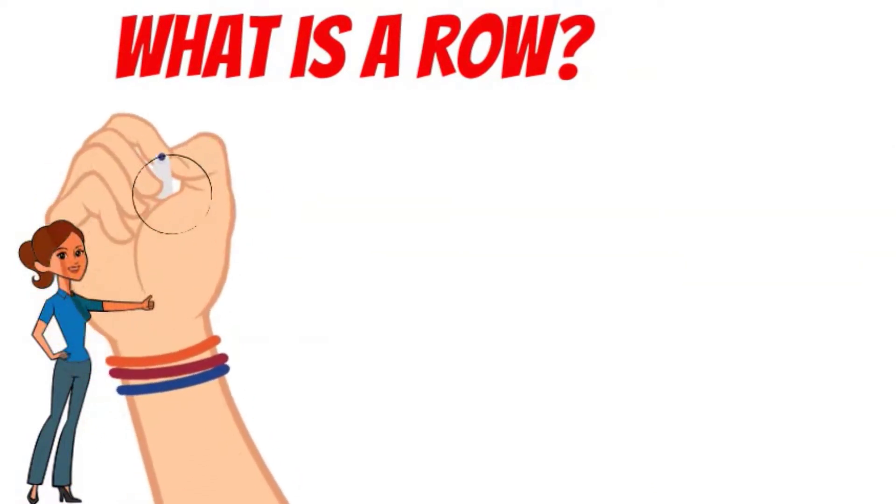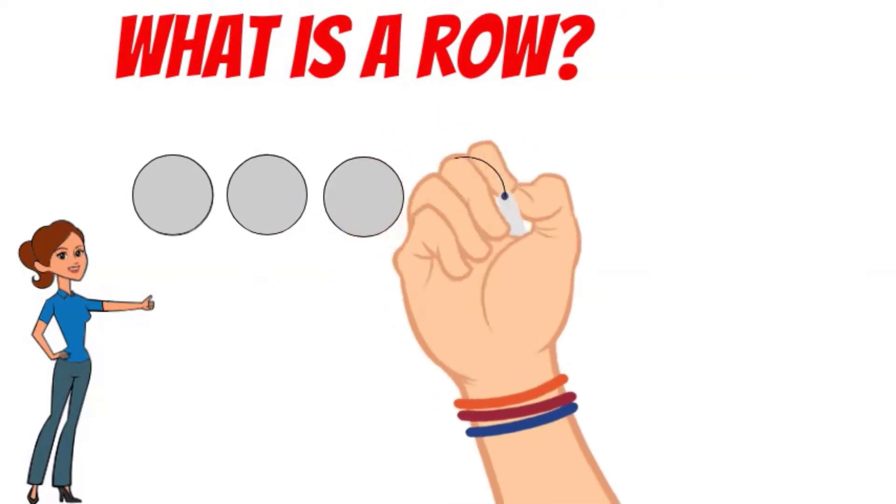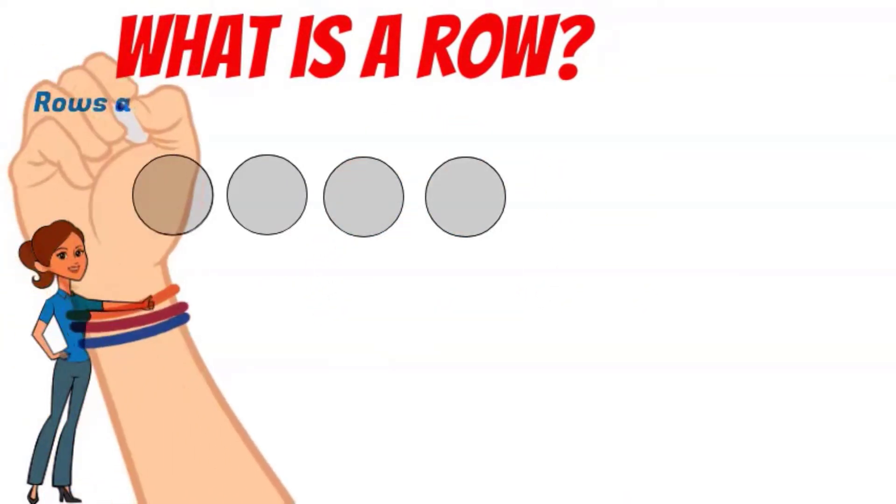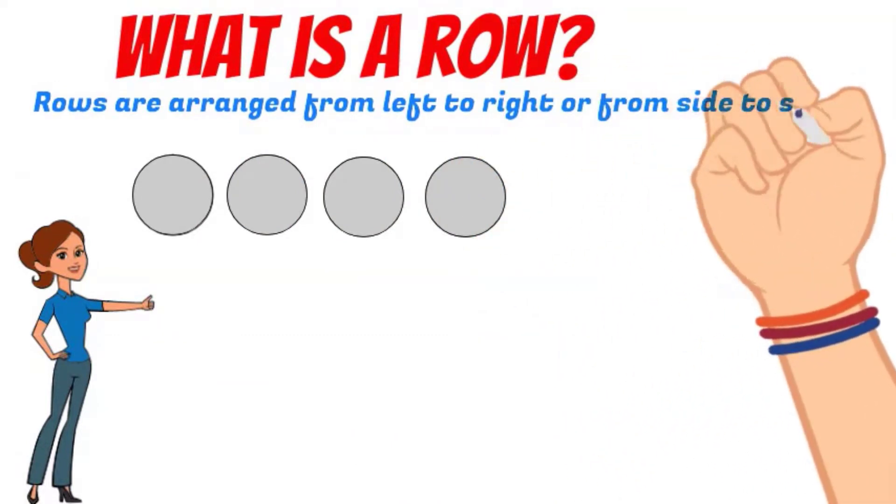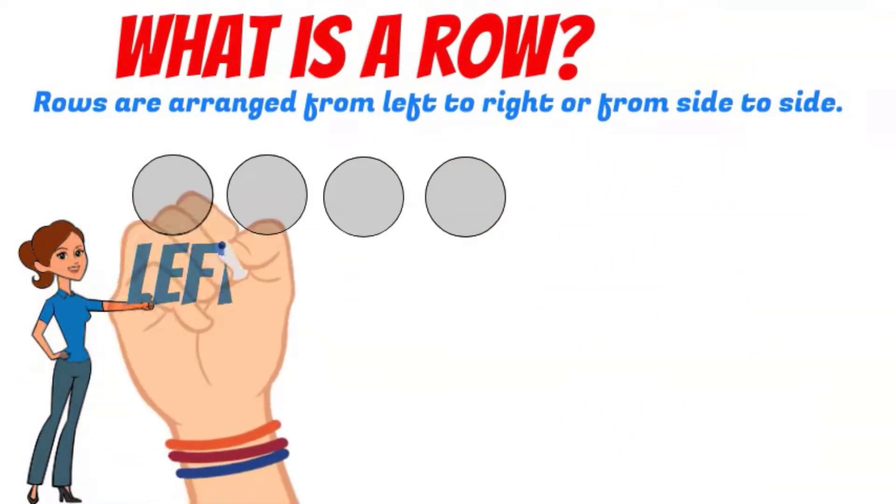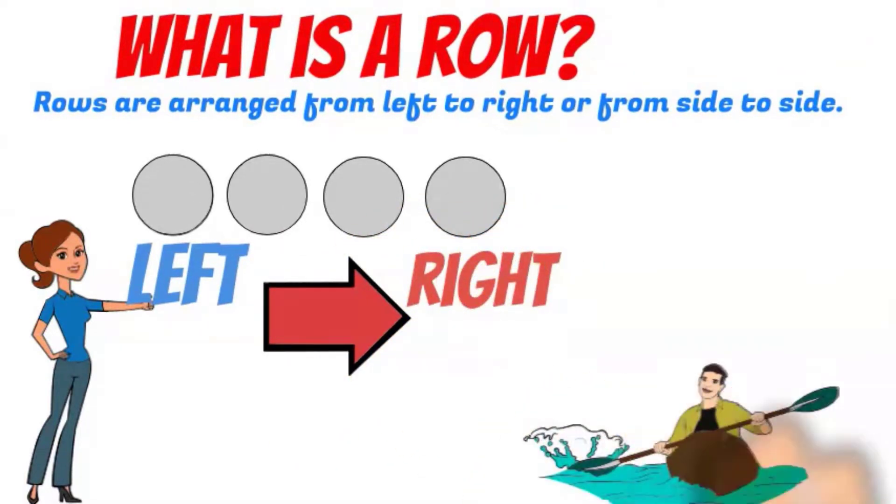What is a row? Here I am drawing circles in a row. I'm drawing the circles from left to right. Rows are arranged from left to right or from side to side, left side to the right side.